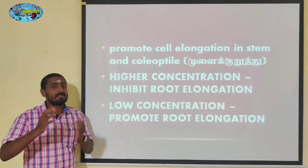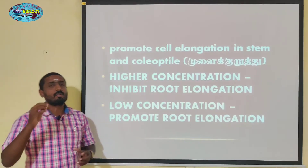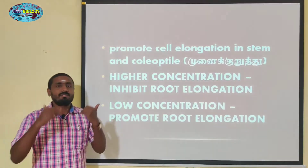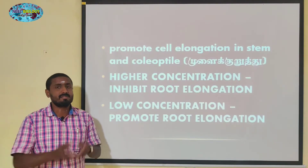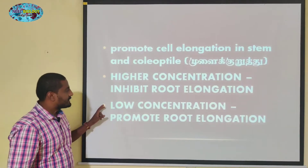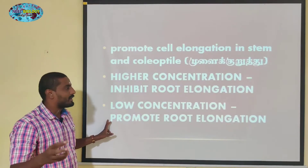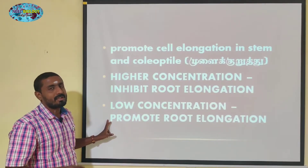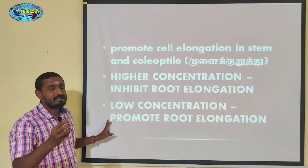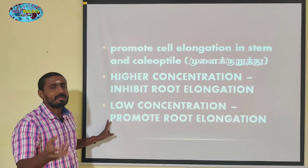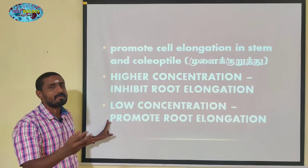At higher concentration, if you apply auxin to the root system, growth will be inhibited in the root system — that means the root system growth will be lower. If you apply a low concentration, the root elongation will be lower as well. If you apply it to the stem region, the root system will be lower.